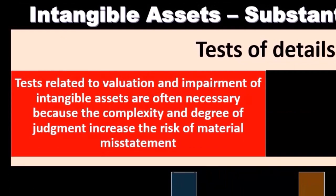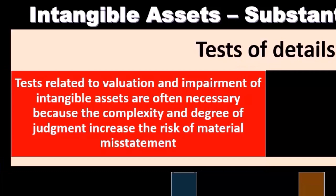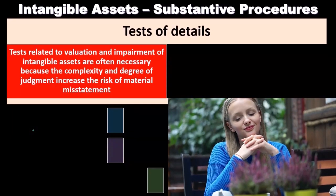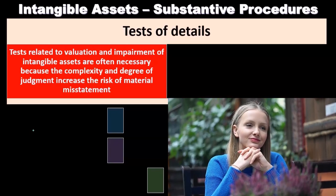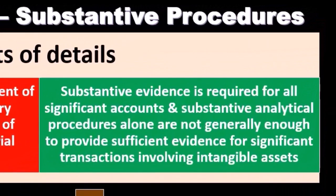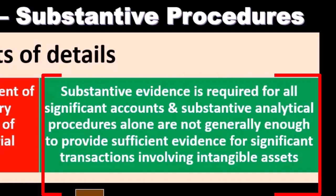Tests related to valuation and impairment of intangible assets are often necessary because of the complexity and degree of judgment involved, which increases the risk of material misstatement. We want to test the valuation process and any impairment — how assets were recorded on the books and whether they have decreased in value. For goodwill, for example, we need tests to assess decreases in value, and specialists may be required. Substantive evidence is required for all significant accounts, and substantive analytical procedures alone are generally not sufficient for significant transactions involving intangible assets.